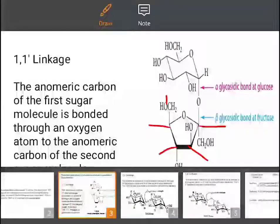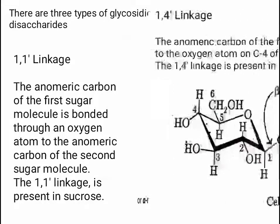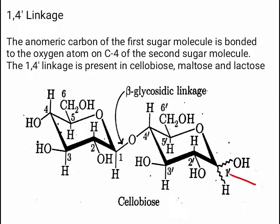The 1,4'-linkage: the anomeric carbon of the first sugar molecule is bonded to the oxygen atom on C4 of the second sugar molecule. The 1,4'-linkage is present in cellobiose, maltose, and lactose. In cellobiose, C1 through C6 of the first unit and C1' through C6' of the second unit can be identified, and the bonding is between C1 and C4' — that's why this is the 1,4'-linkage.